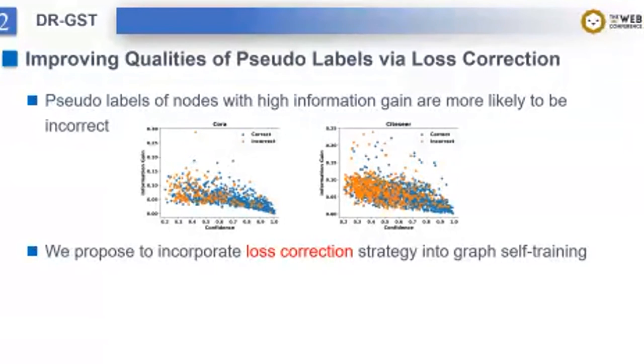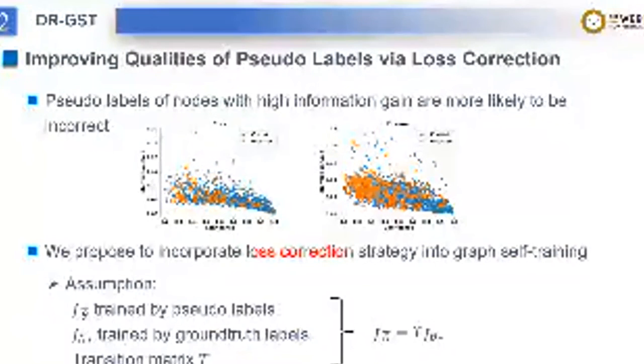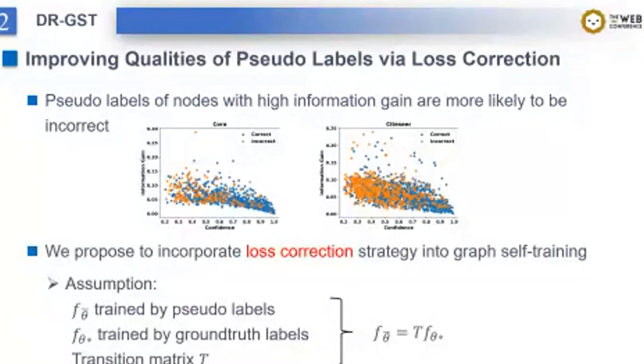In order to remedy this defect, we propose to incorporate loss correction strategy into graph self-training to improve the quality of pseudo labels. Loss correction has the following assumptions. Given a model f_θ_bar trained by pseudo labels as well as a model f_θ_star trained by ground truth labels, we have a c multiplied by c-dimension transition matrix.